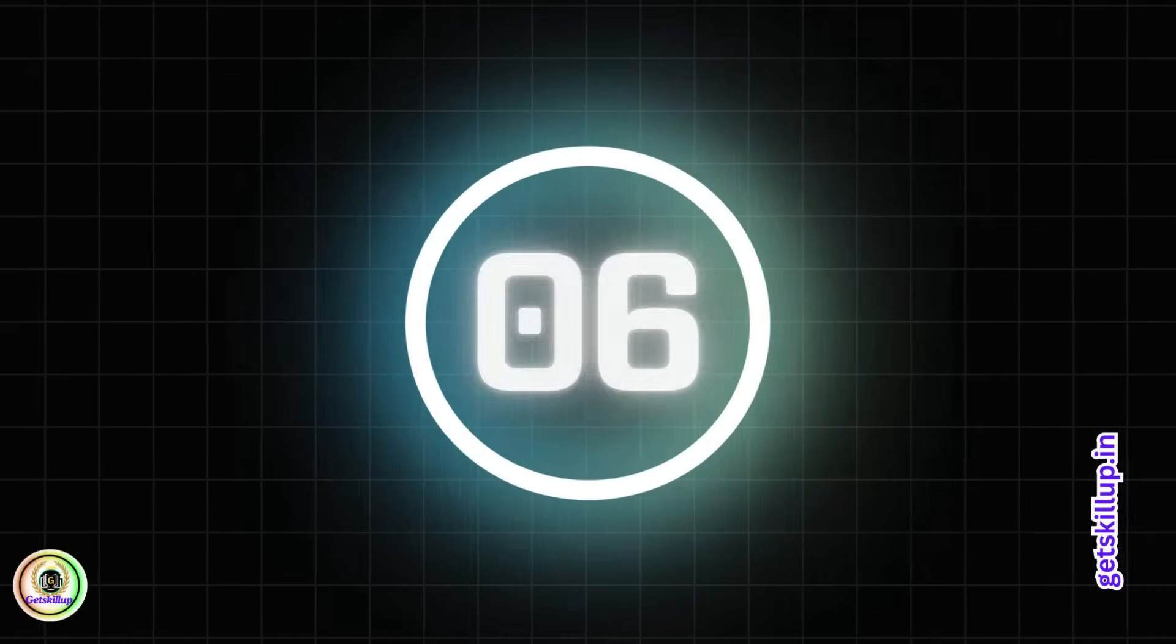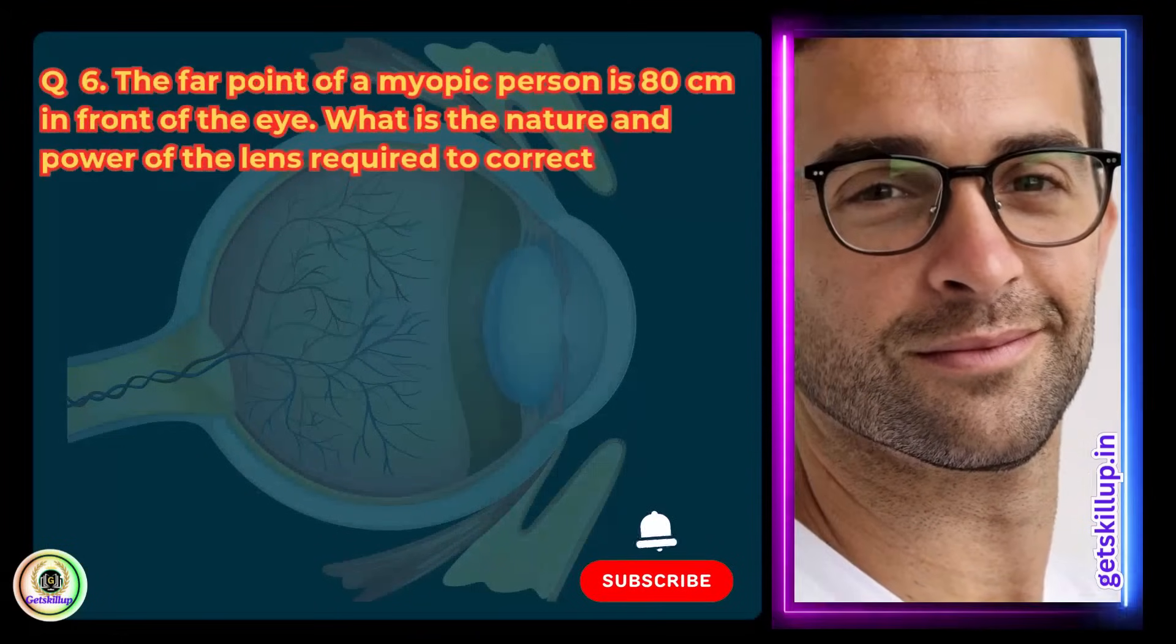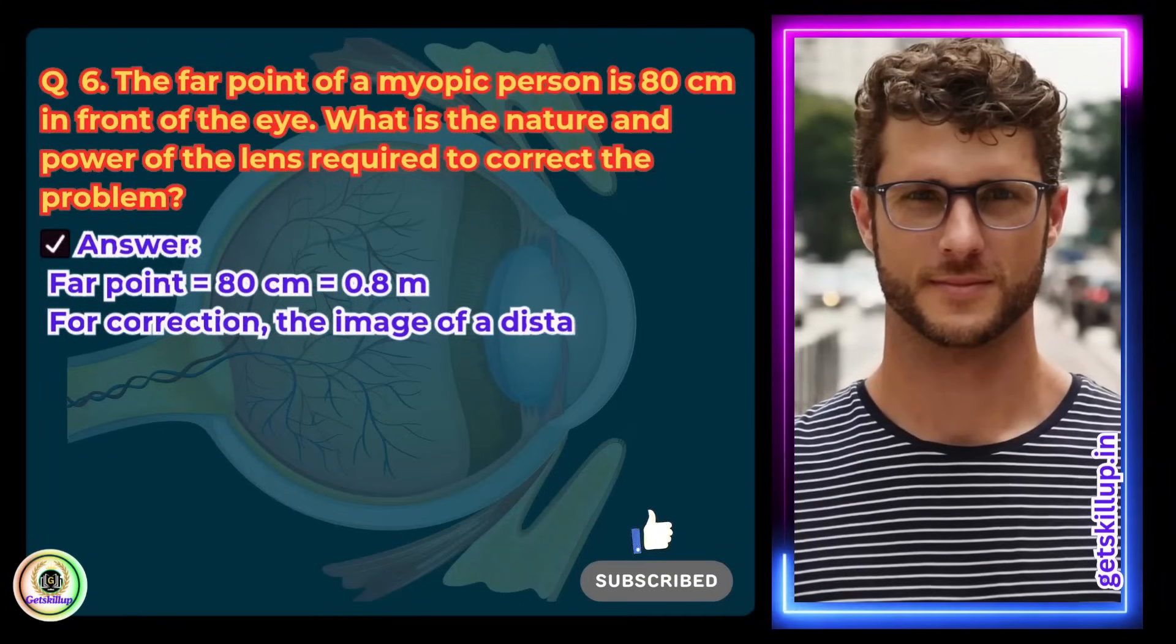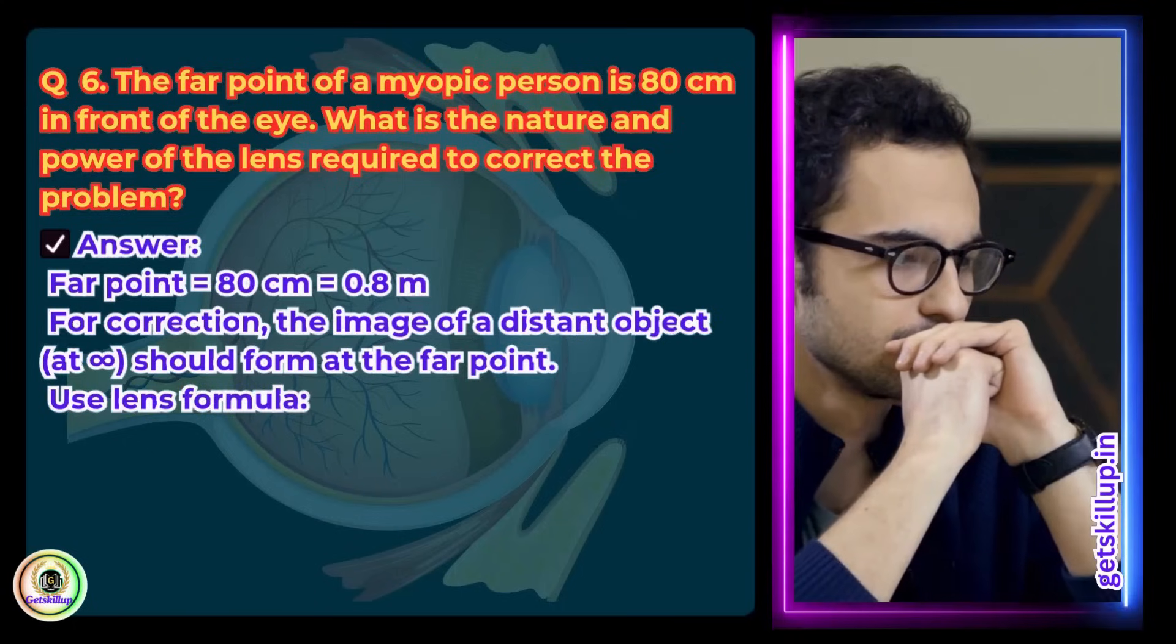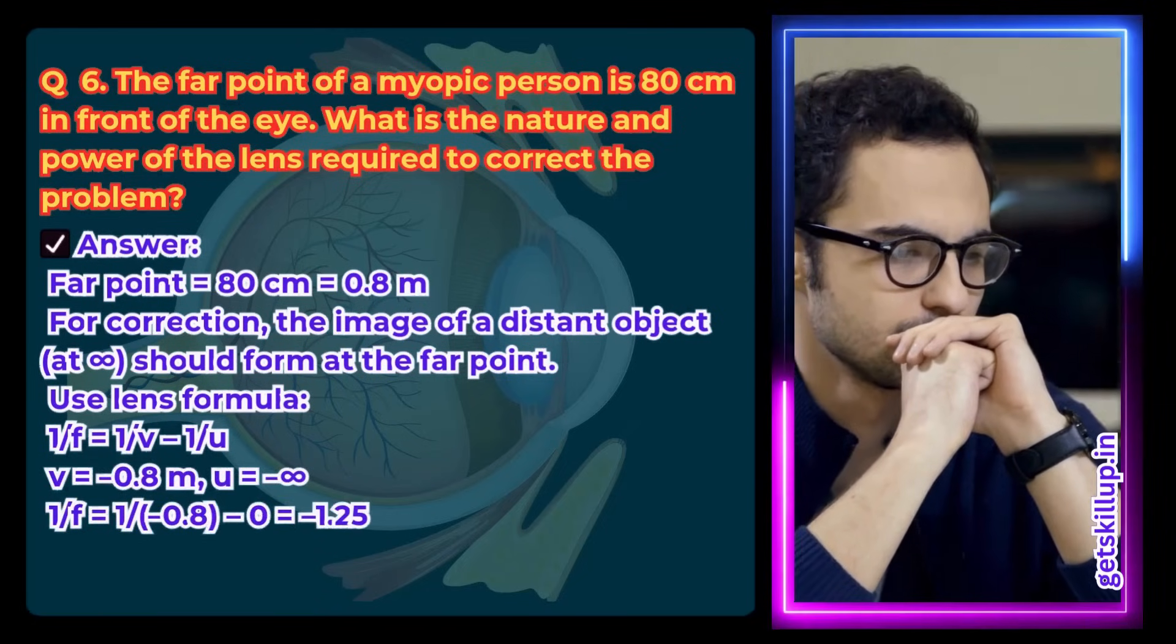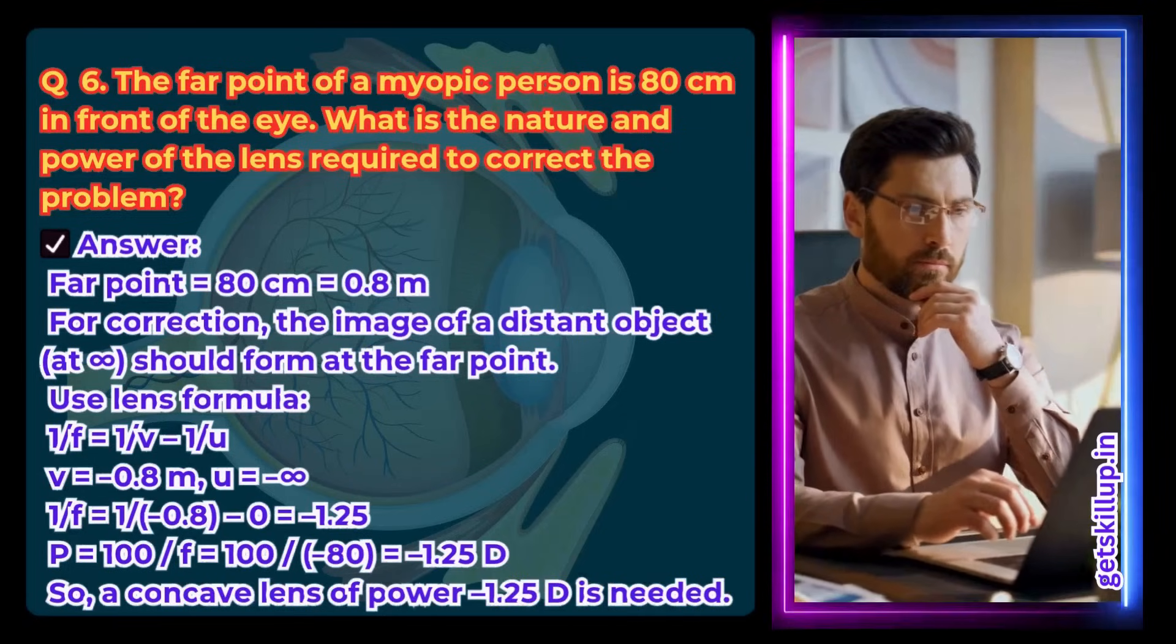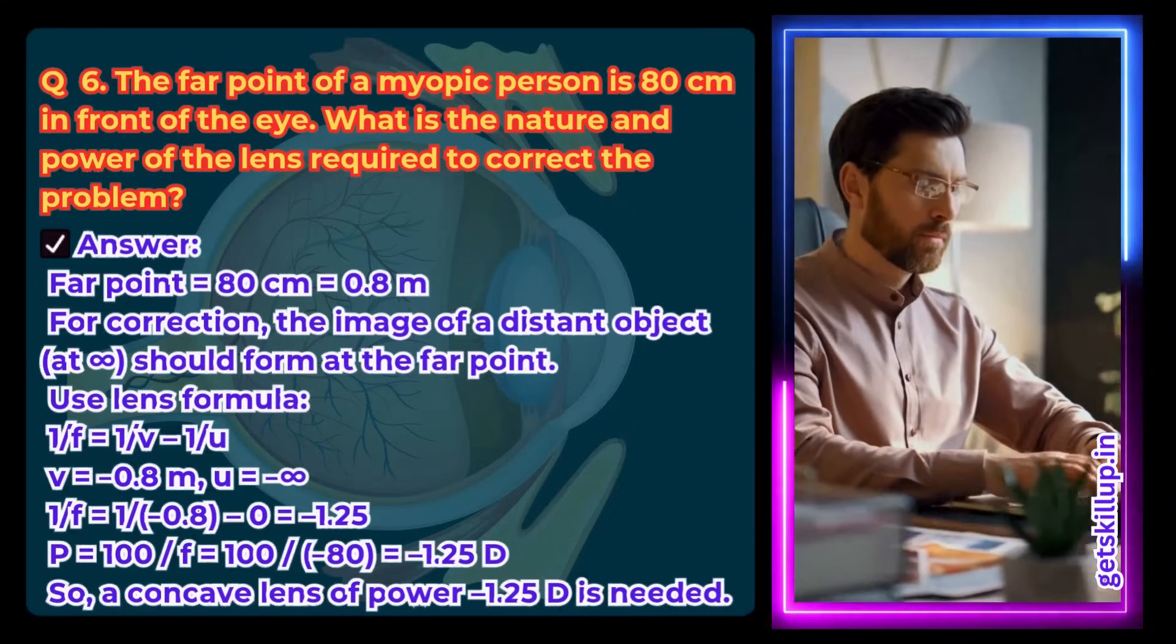Question 6. The far point of a myopic person is 80 cm in front of the eye. What is the nature and power of the lens required to correct the problem? Answer: Far point equals 80 cm, which is equal to 0.8 meter. For correction, the image of a distant object at infinity should form at the far point. Using lens formula: 1 by F equals 1 by V minus 1 by U. V equals minus 0.8 meter, U equals infinity. 1 by F equals 1 by minus 0.8 minus 0 equals minus 1.25. Power equals 100 divided by F, which is equal to 100 divided by minus 80, equals minus 1.25 D. So, a concave lens of power minus 1.25 diopters is needed.